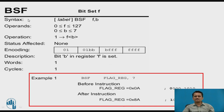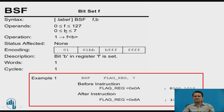The first instruction is BSF — Bit Set File — used for setting a particular bit of file register f. The syntax is: BSF f, b. The operand f can take values from 0 to 127, representing any file register of the selected bank. The operand b specifies which bit of that 8-bit file register to set.